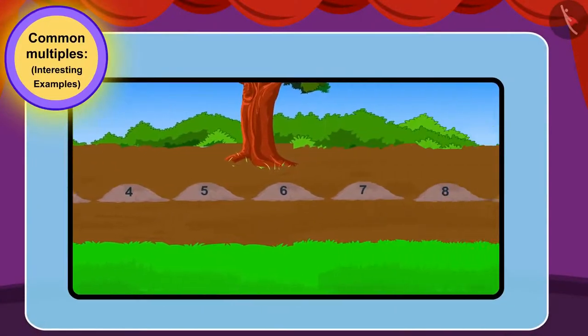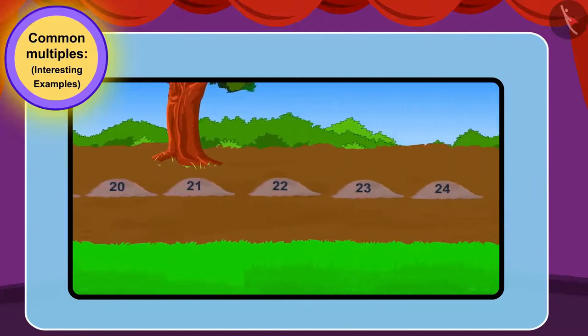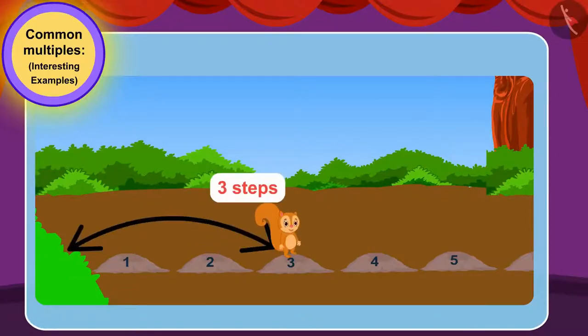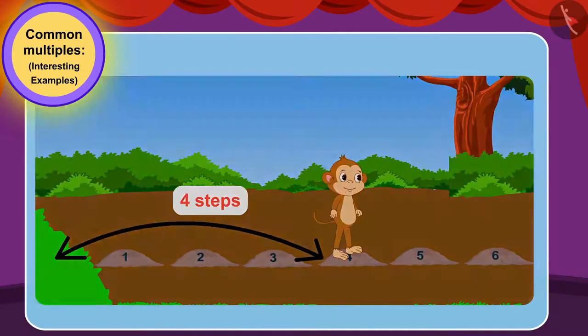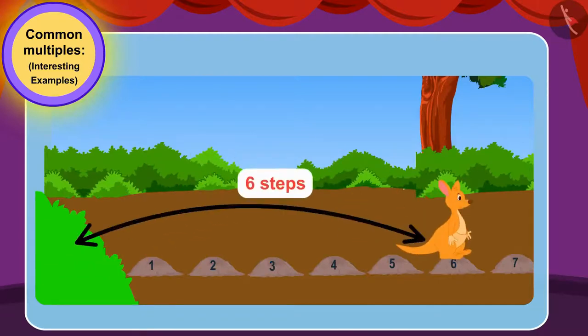If there are more than two stones on which all three friends jump, then all three will fall into the marsh. Chanda can jump three steps in one jump. Babban can jump four steps in a jump. And Kittu can jump six steps in a jump.